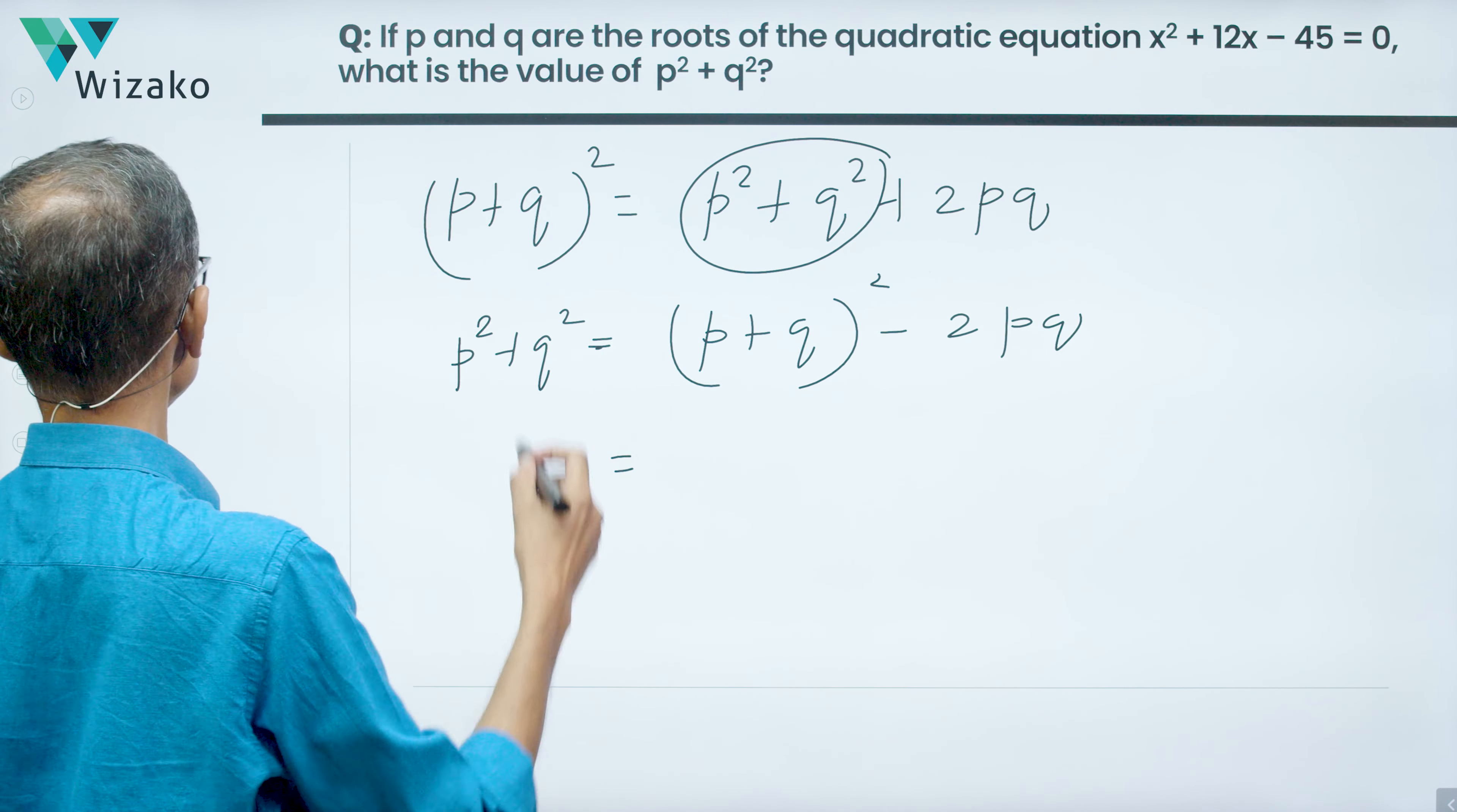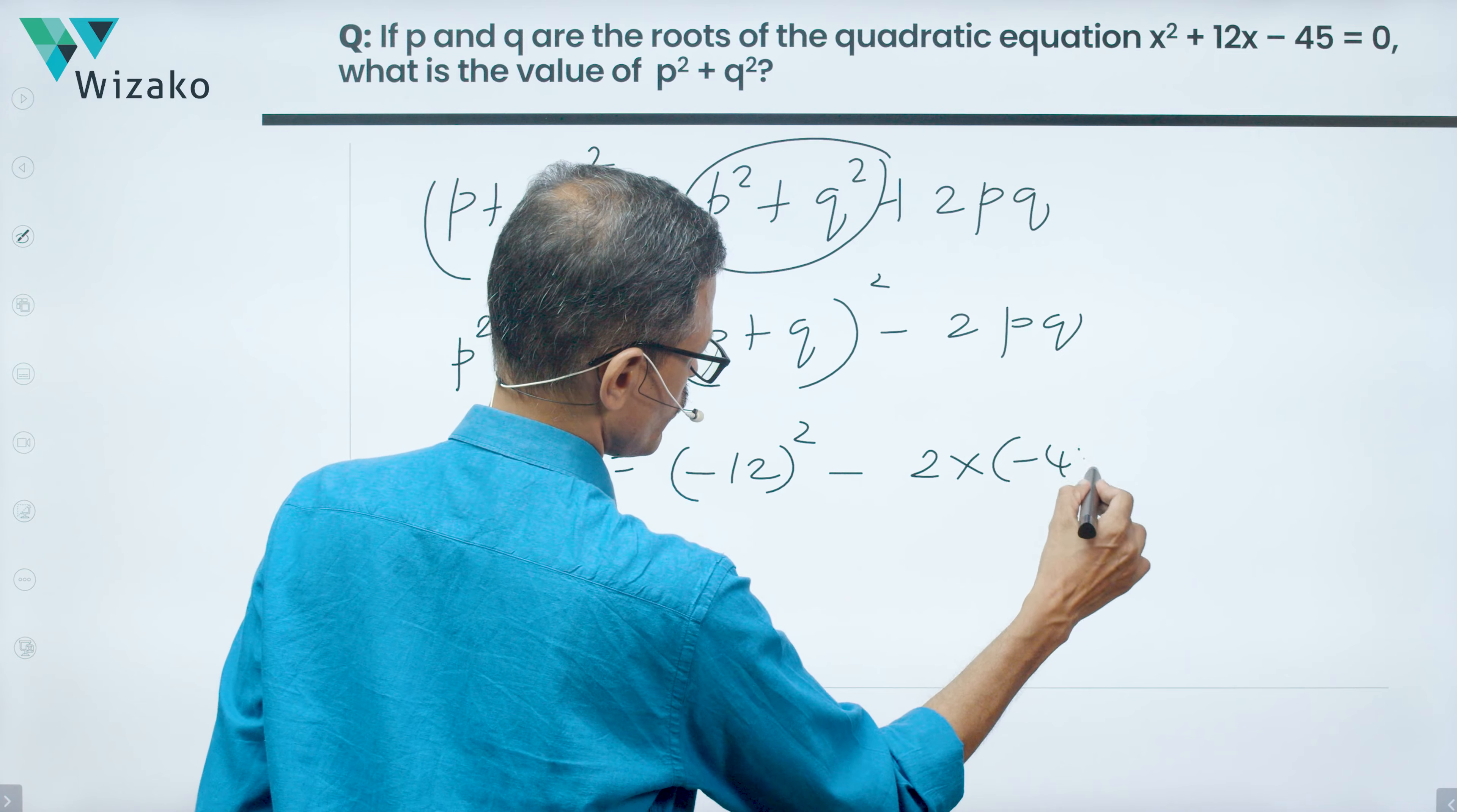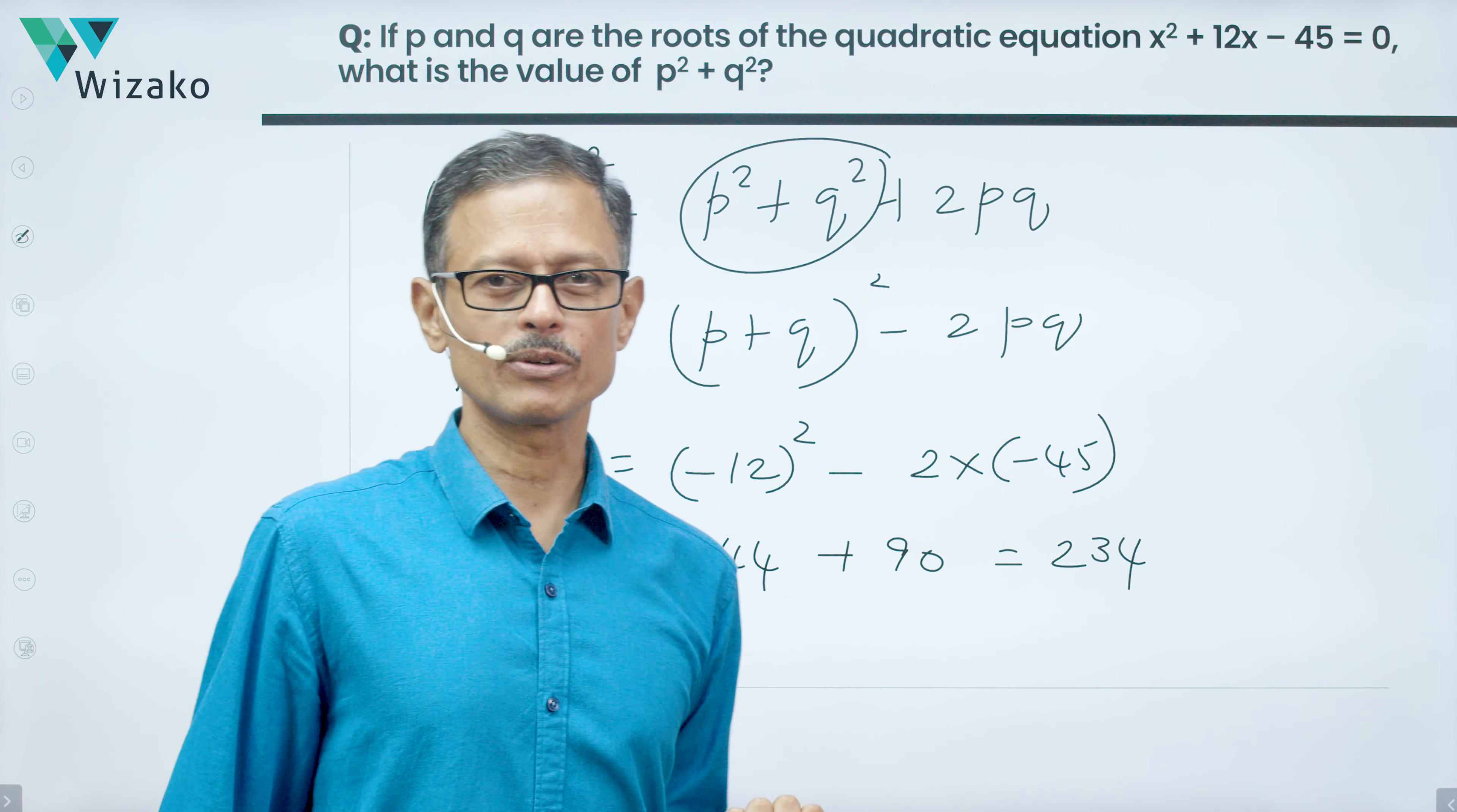Do we know the value of p + q? Yes, we found it to be equal to -12. So this is (-12)² minus 2 times, what is the value of pq? pq is equal to -45, minus 2 times -45. So this is 144, minus of minus makes it plus, plus 90 which is equal to 234. The same answer as we got with the earlier method. So p² + q² is the same 234.